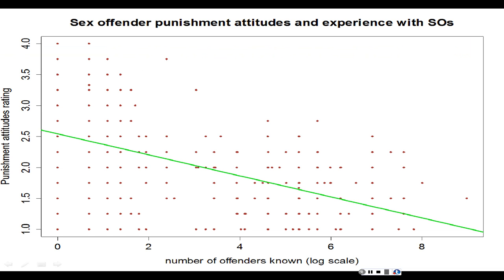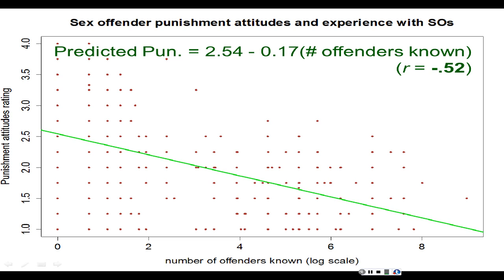But when we add in the treatment professionals who were also in the study — some of whom knew up to 8,000 offenders personally, which is realistic for probation officers and lifelong sex offender therapists — now we have a big range. Using a log scale because the distribution was so skewed, we now get a clear negative relationship: the more offenders you've known, the less you want to punish sex offenders. R is negative 0.52. If you're only including people who have known very few offenders, you might not see any relationship. But if you include people who have known lots of offenders, then you will see a relationship. No relationship might simply be because you restricted your range.